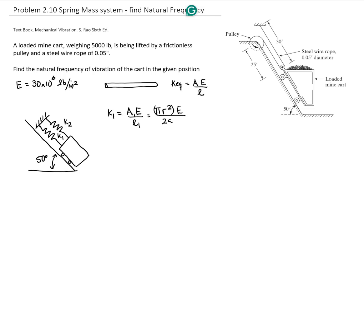In this case, the length is 25 feet, but we want everything in the same units. So we write (0.05/2)² times π times 30×10⁶ divided by 25 times 12 inches. K1 equals 163,625 pounds per inch.